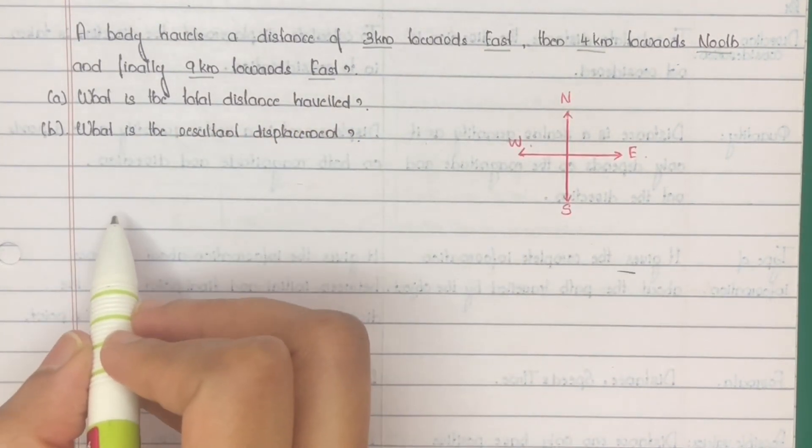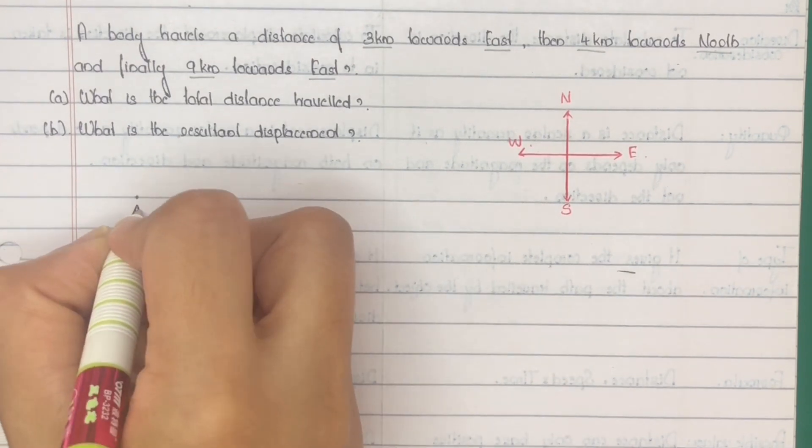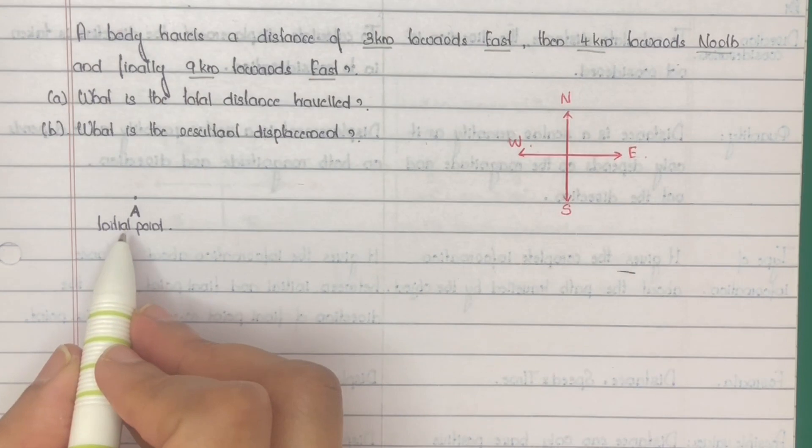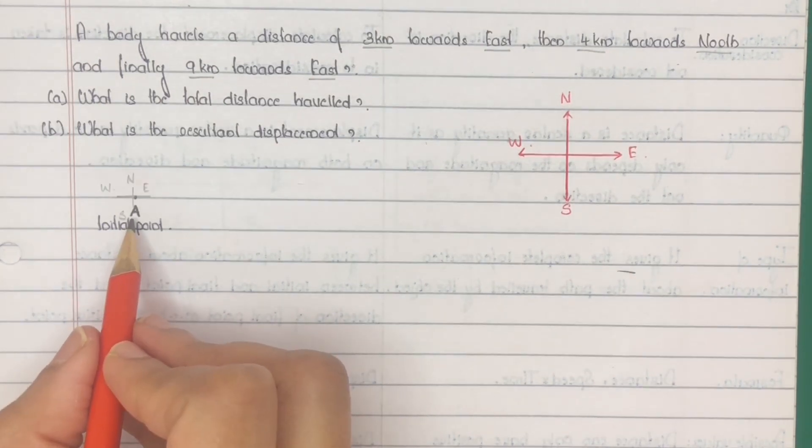First consider a reference point, that is a starting point. Point A is the initial point from where the body starts its journey. So now the body is at point A.